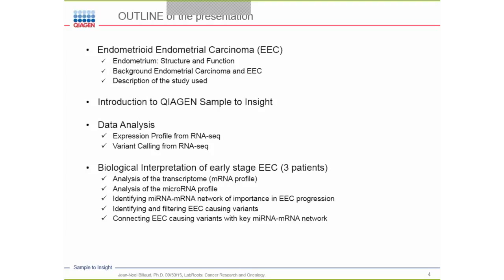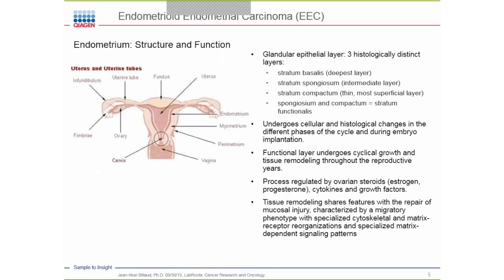Here is the outline of the presentation. We are going to look at the transcriptome mRNA profile, look at the microRNA profile, identify microRNA-mRNA networks of importance in EEC progression, identify and filter EEC-causing variants, and finally connect the EEC-causing variants with key microRNA-mRNA networks, before concluding.